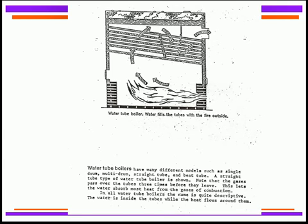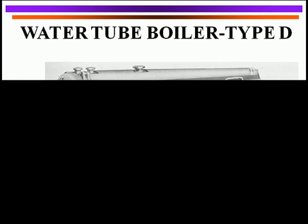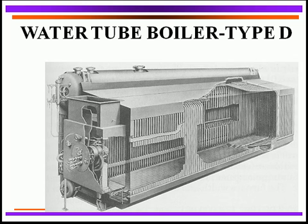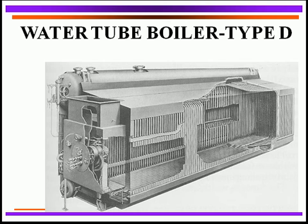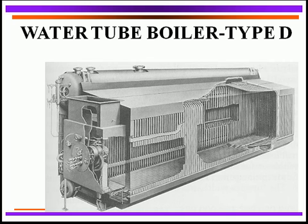The water tube boilers — exactly the opposite — the fire is on the outside of the tubes and the water is on the inside of the tubes. Here's a good example of a water tube boiler — what we call a Type D boiler. It's designated D because in the upper left-hand corner we have what we call a steam drum — that's where our feed water comes in and where our steam production actually occurs. We also have another drum at the bottom left-hand corner known as the mud drum. That's where a lot of our sediment and sludge accumulates and that's where we blow it down from. The configuration of the boiler tubes gives us what looks like a Type D design, so that's why they call it a Type D boiler.